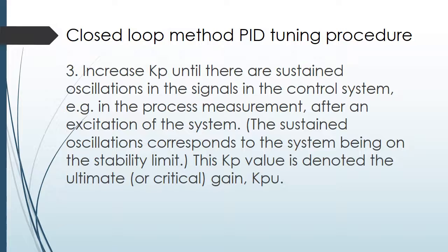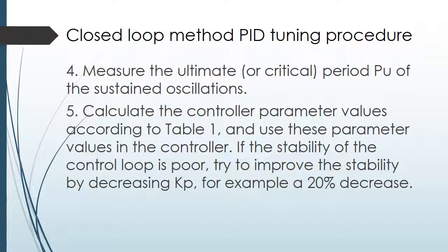For step four: measure the ultimate or critical period PU of the sustained oscillation. For step five: calculate the controller parameter values according to Table 1, and use these parameter values in the controller. If the stability of the control loop is poor, try to improve stability by decreasing KP — for example, a 20% decrease.